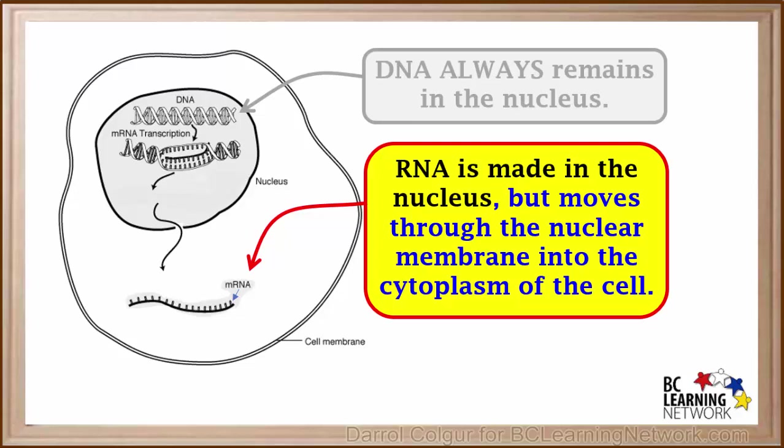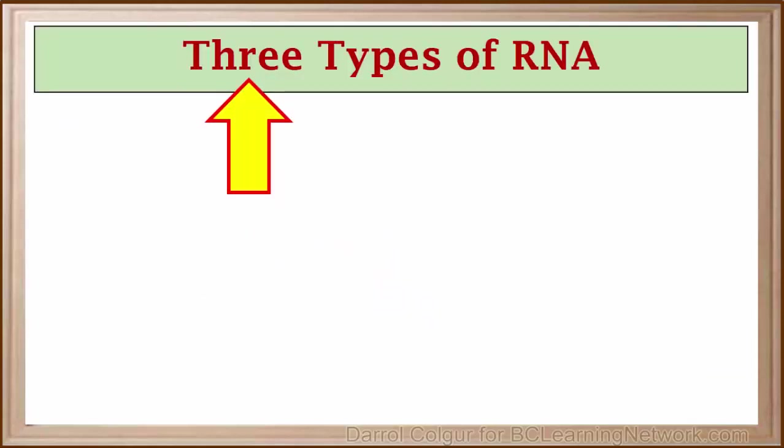The type of RNA we've shown here is called mRNA. Once it's in the cytoplasm, it assists ribosomes in the process of making proteins. There are three main types of RNA that are used in protein synthesis.